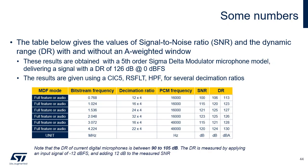The table on this slide provides measurements of the digital filters implemented in MDF and ADF. These results are obtained with a fifth-order sigma-delta modulator microphone model delivering a signal having a DR of 126 dB at 0 dB full scale. The configuration of the filter uses CIC order 5, reshape filter, and high-pass filter. Values of signal-to-noise ratio and dynamic range are provided for various decimation ratios.